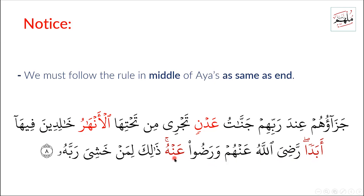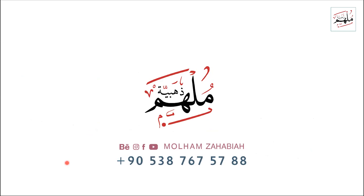As you hear, the wrong form would be with a vowel at the end. Let's continue reciting: 'Radiyallahu anhum wa radu anhu, thalika liman khashiya rabbah.' Also 'rabbah' — I should stop on 'rabbah' with sukun. This is Mulham Vahabiyya, and I hope all of you will recite the Quran correctly. The Prophet Muhammad sallallahu alaihi wasallam said: the best of you is he who learns and teaches the Quran to others. Salamu alaikum warahmatullahi wabarakatuh.